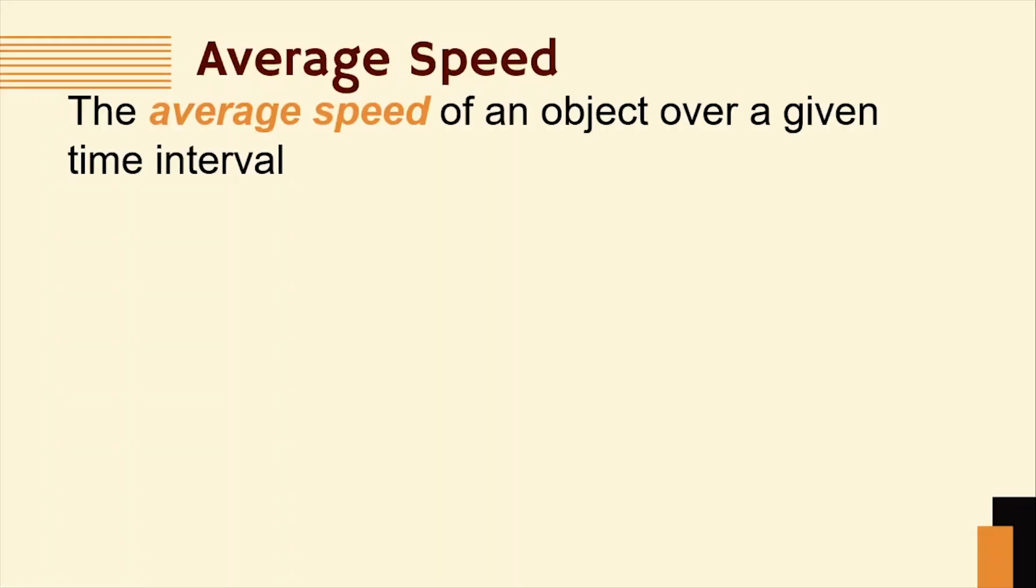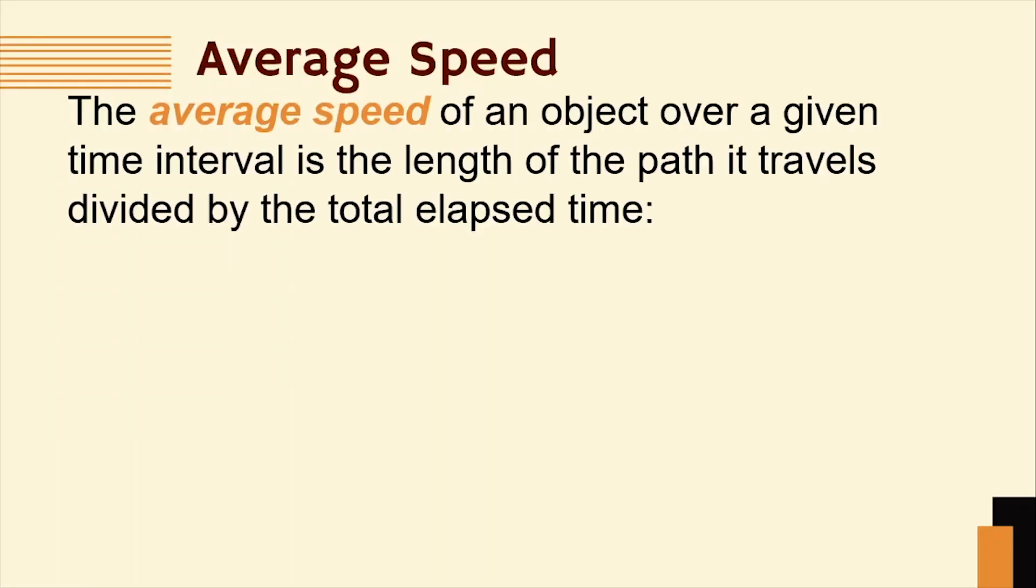By definition, the average speed of an object over a given time interval is the length of the path it travels divided by the total elapsed time.